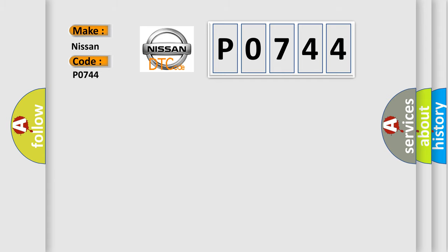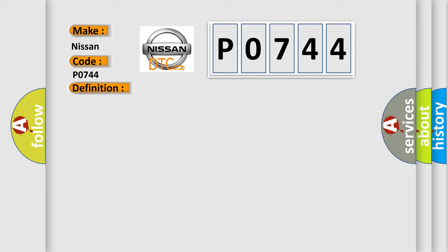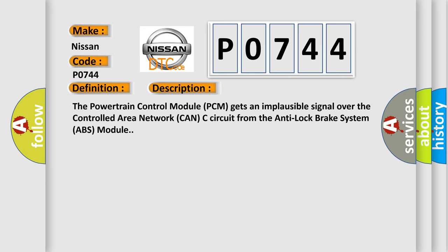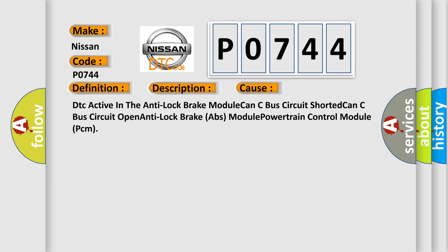The basic definition is: Wheel speed signal left front rationality. The powertrain control module PCM gets an implausible signal over the controlled area network CAN-C circuit from the anti-lock brake system ABS module. This diagnostic error occurs most often in these cases: DTC active in the anti-lock brake module, CAN-C bus circuit shorted, CAN-C bus circuit open, anti-lock brake ABS module, or powertrain control module PCM.